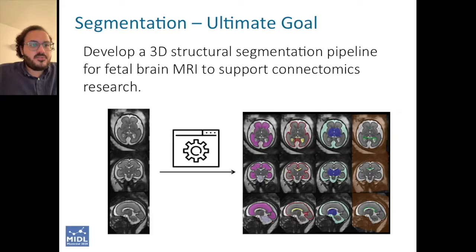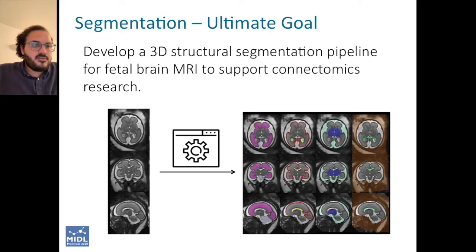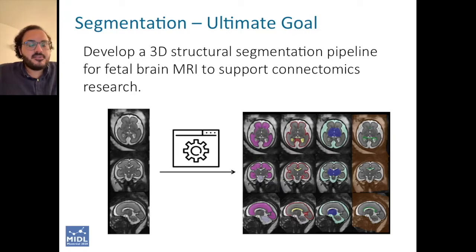These would be structures that are perhaps of direct interest to the connectome, such as the cortical gray matter and the white matter, but also ideally would want the segmentation of structures such as the CSF, ventricles, brainstem, etc. And ideally would want the system to work on any fetal scan regardless of gestational age.